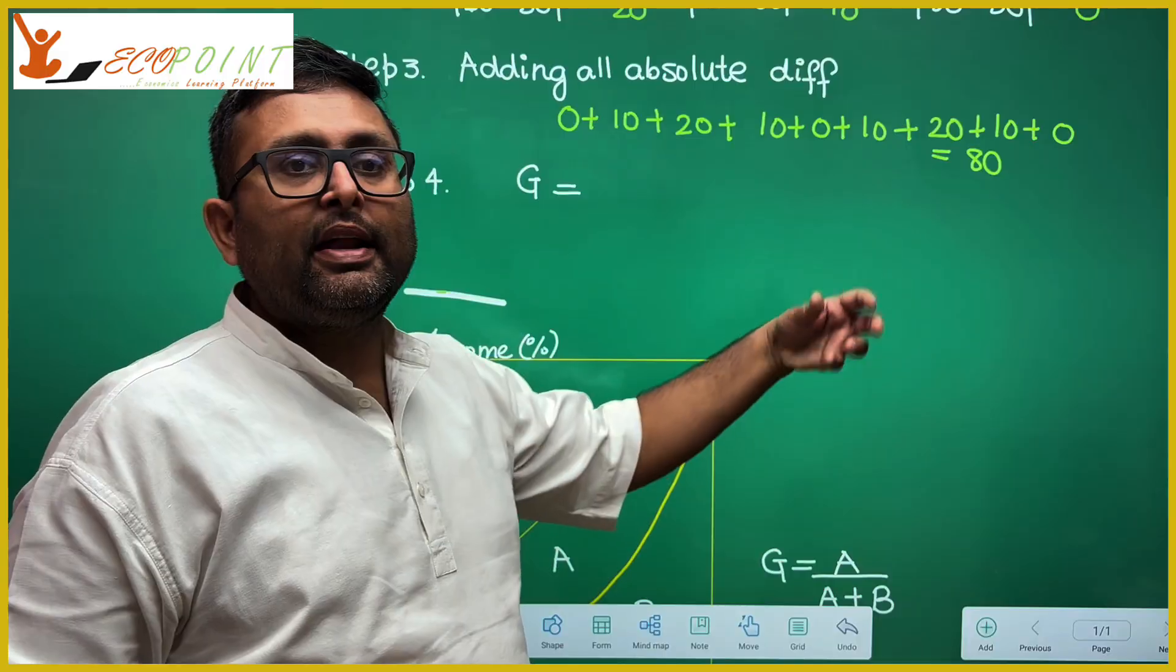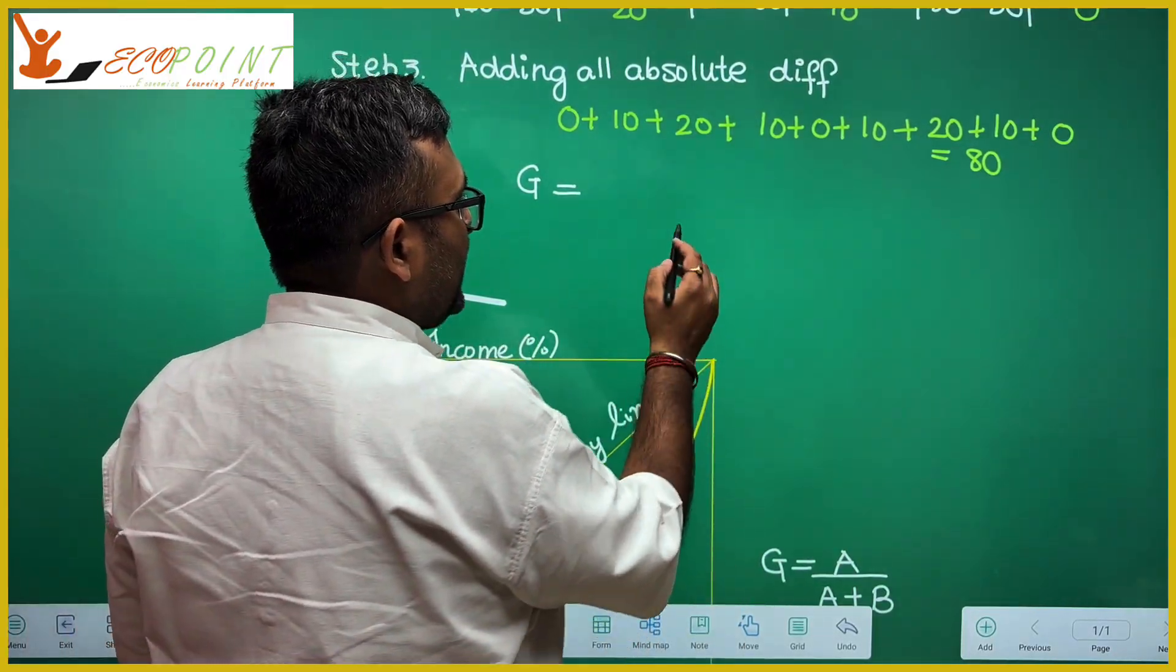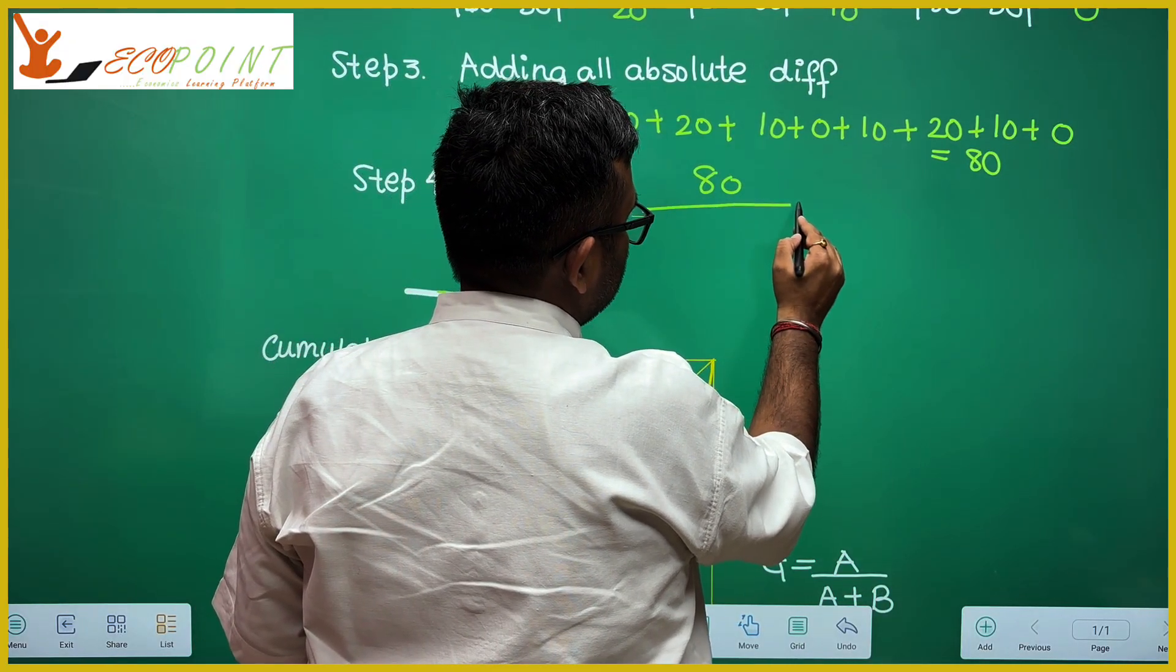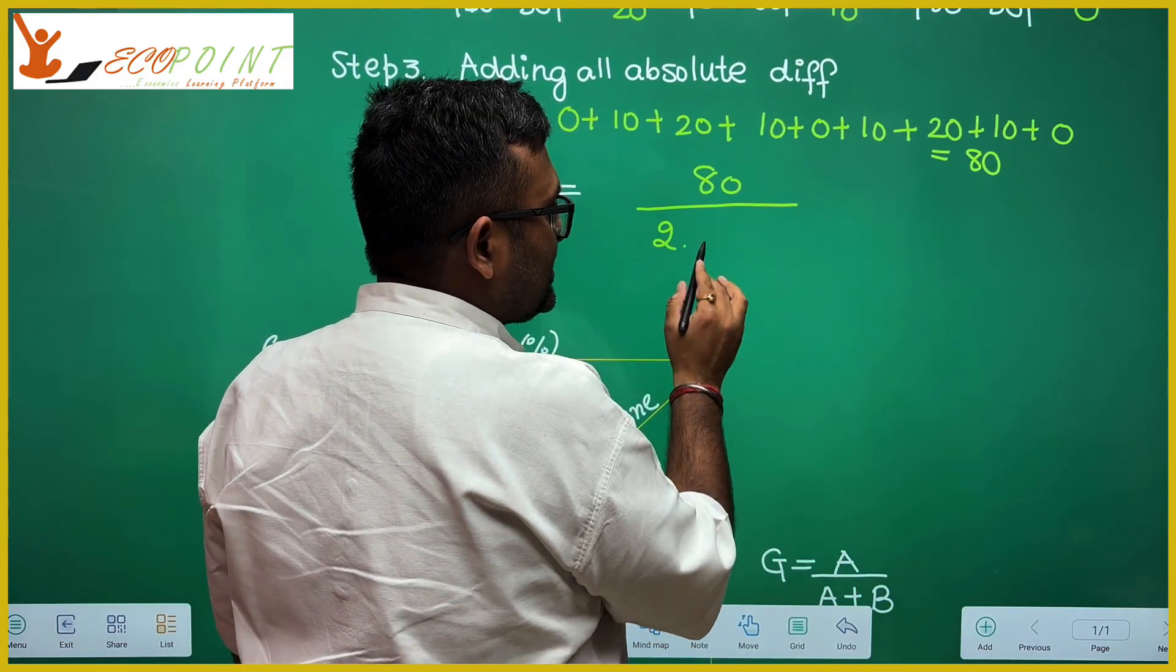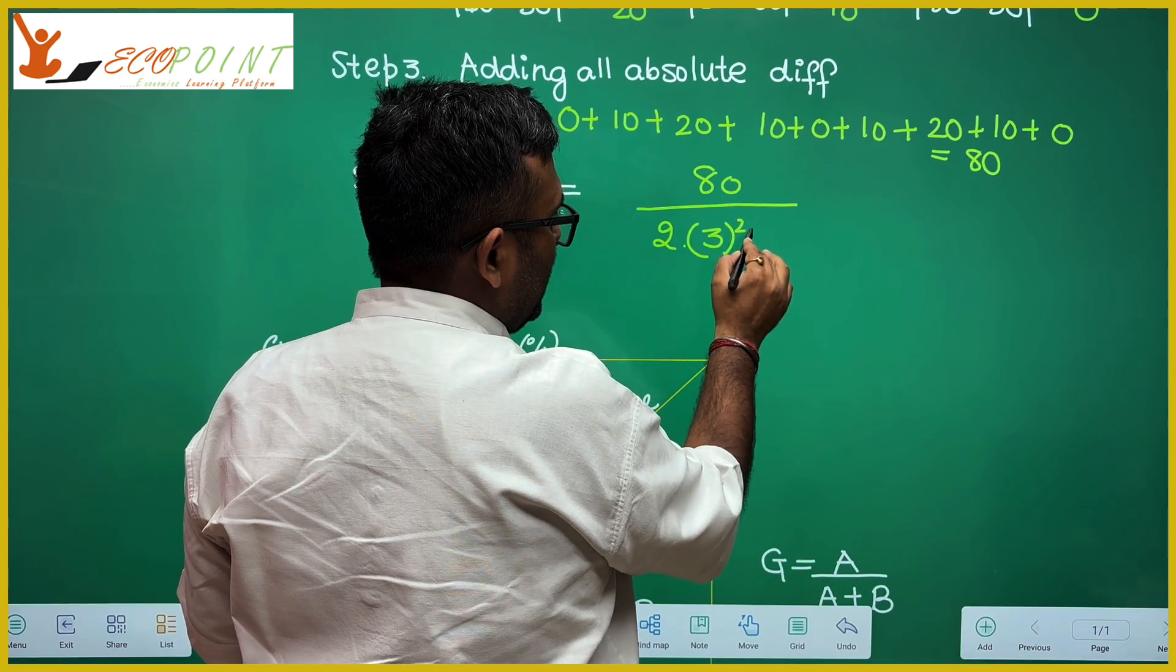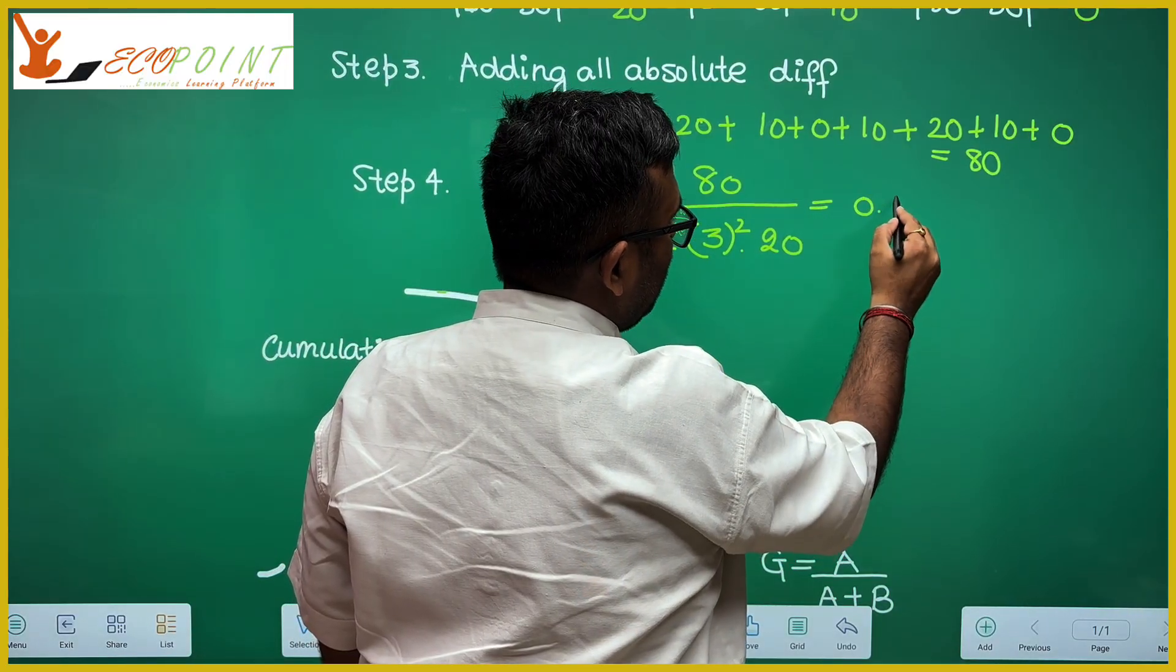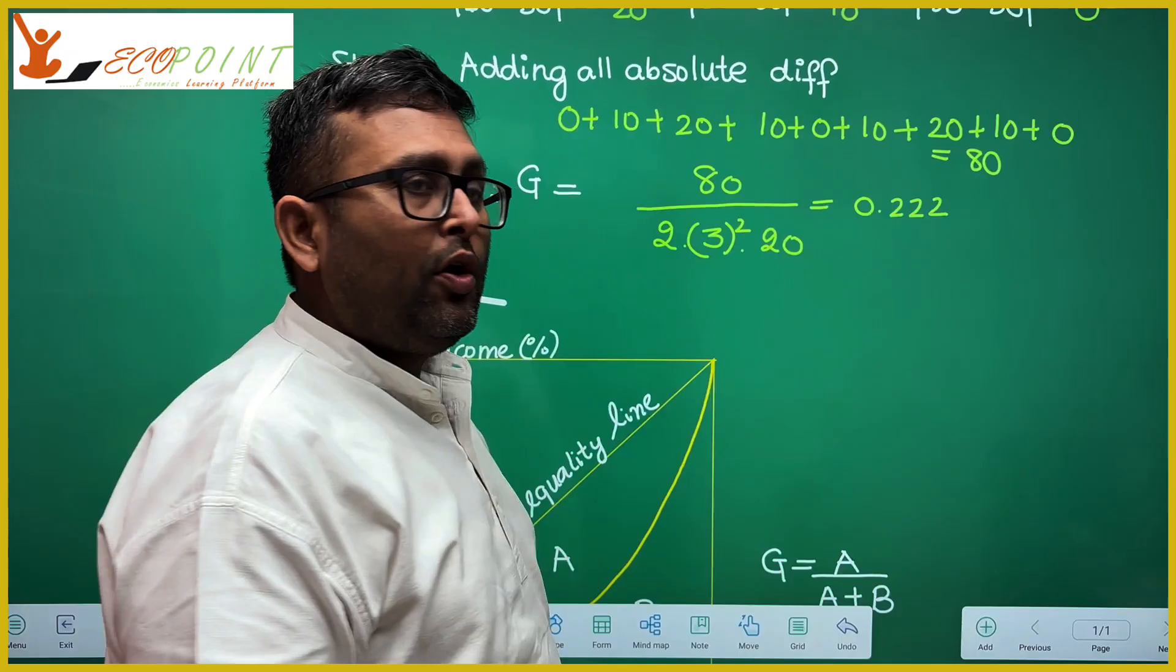Now we will put these values which we have calculated in the formula. So numerator is the sum of pairwise absolute deviations which is 80 upon 2n square. N square is number of individuals are 3, so 3 square into mu. Mu is average income which is 20. And this comes out to be 0.222. So this is the value of Gini coefficient.